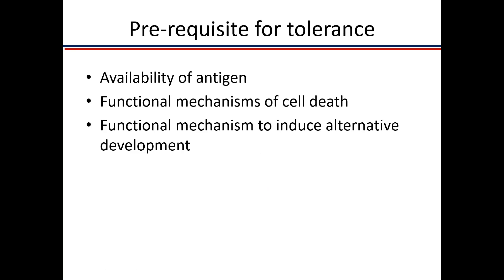What are the prerequisites for generation of tolerance? First, you need to know against what you are developing tolerance — you need availability of antigen. Second, you need a mechanism of cell death to get rid of cells reacting to your own antigens. Third, you need a functional mechanism to make cells that recognize self-antigen but respond in a non-detrimental way — a functional mechanism to induce alternative development.